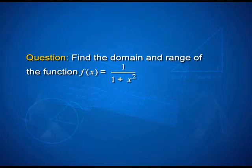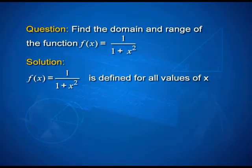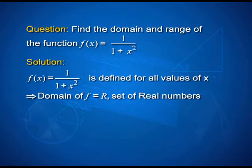Our next question: find the domain and range of the function f, where f(x) = 1 divided by 1 plus x squared. The domain consists of all the values of x for which f is defined. In this case, the denominator 1 plus x squared can never be 0, because that would mean x squared equals negative 1, which cannot happen since x squared is always positive. That means f is defined for all real numbers, and so the domain of f is the set of all real numbers.